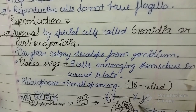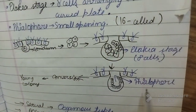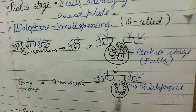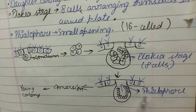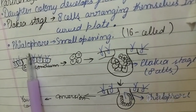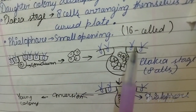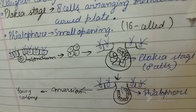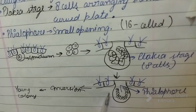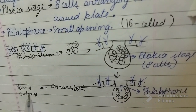Further division of these eight cells takes place, forming a 16-celled structure. This 16-celled structure has an opening called the phialopore — a small opening found in Volvox at the 16-celled stage, after the plakea stage. Then inversion takes place of this whole structure, and then a young colony is formed.